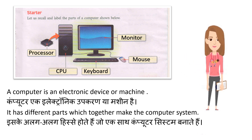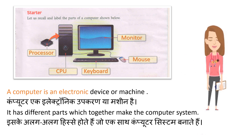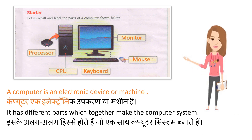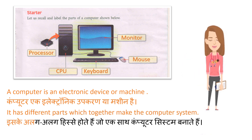Label the parts: Monitor, Mouse, Keyboard, CPU, Processor. A computer is an electronic device or machine. Computer ek electronic upkaran ya machine hai. It has different parts which together make the computer system. Iske alag-alag hissay hote hain jo ek saath computer system banaate hain.